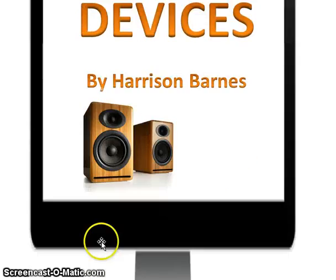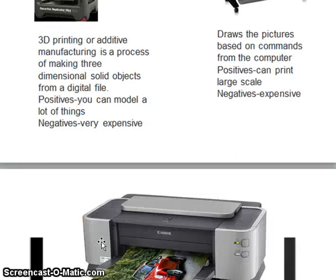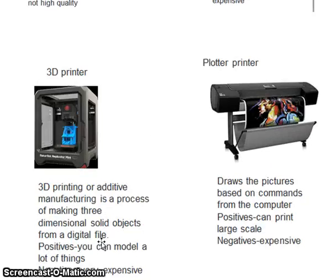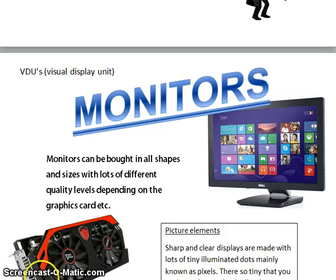Output Devices by Harrison Barnes. First we'll start off with monitors. Monitors are also known as visual display units. They come in different styles and quality levels. Screen colour quality, resolution and clarity are just some of the features that affect how desirable a particular monitor is to you.